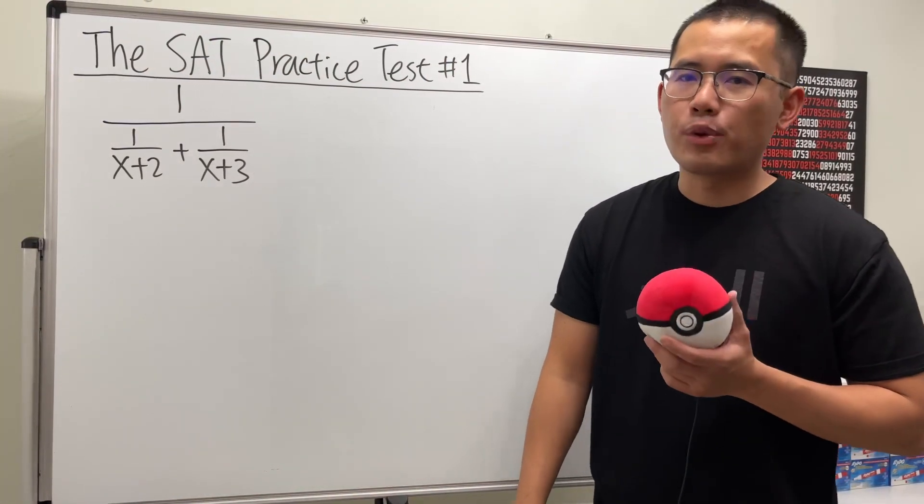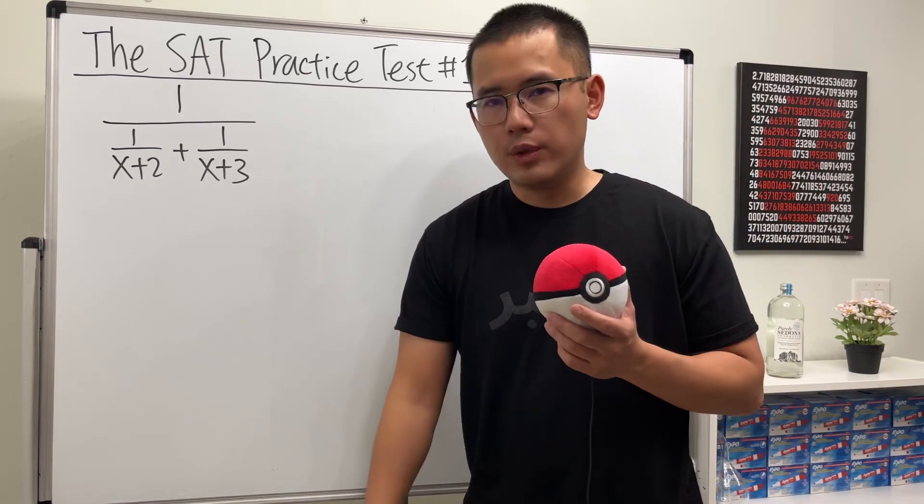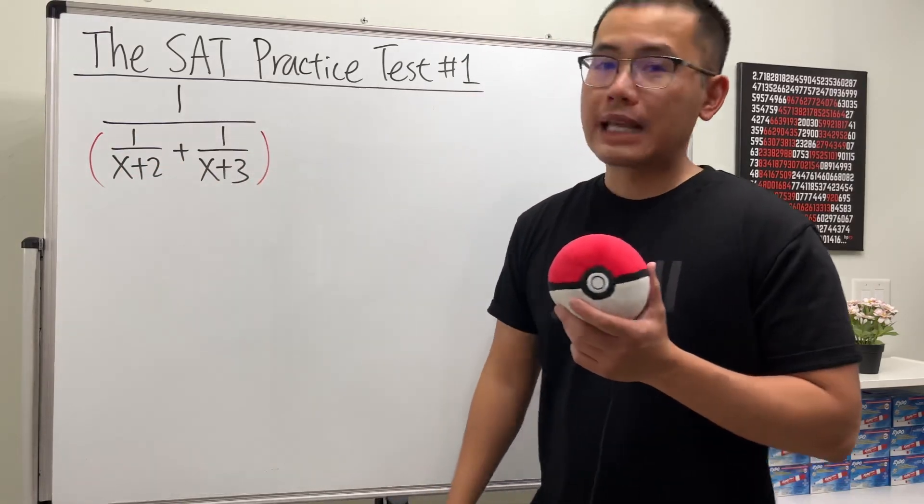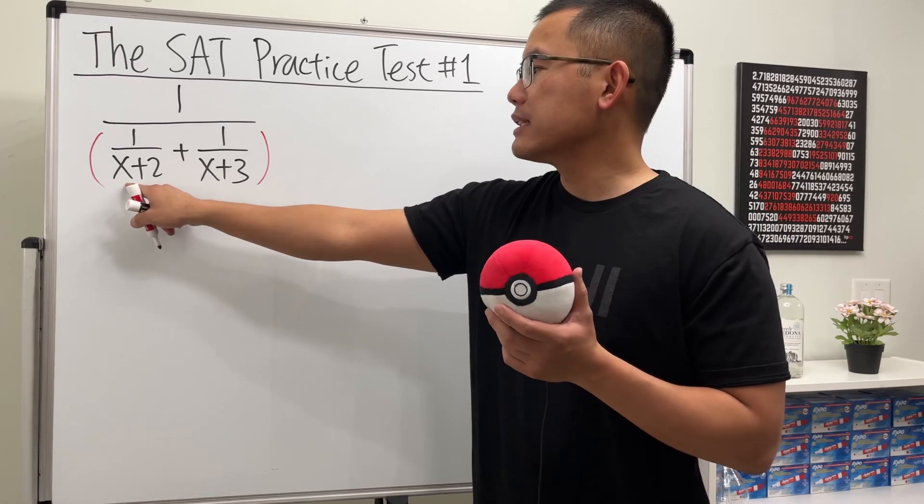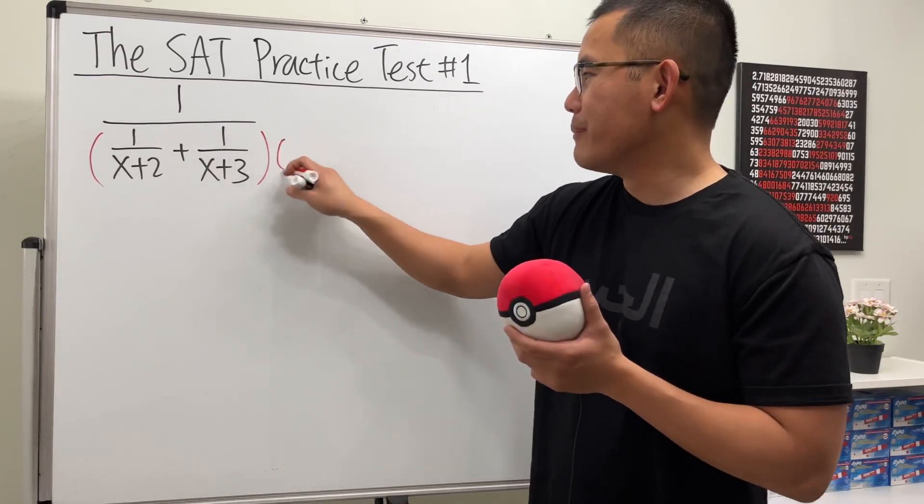Alright, another SAT algebra practice. We are going to simplify this complex fraction. The way we can do this is to multiply the top and bottom by the lowest common denominator of the small fractions. We have x+2 and x+3—they're different, so we just have to multiply both of them.